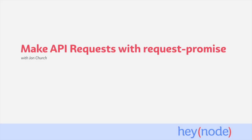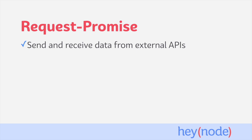Making HTTP requests to an external API server is a task you'll encounter often when working with Node.js. This tutorial serves as a reference for working with Request Promise, the promise-enabled version of the popular library called Request. In this tutorial, you'll learn how to use Request Promise and the different HTTP verbs to make requests to send and receive data from external APIs.